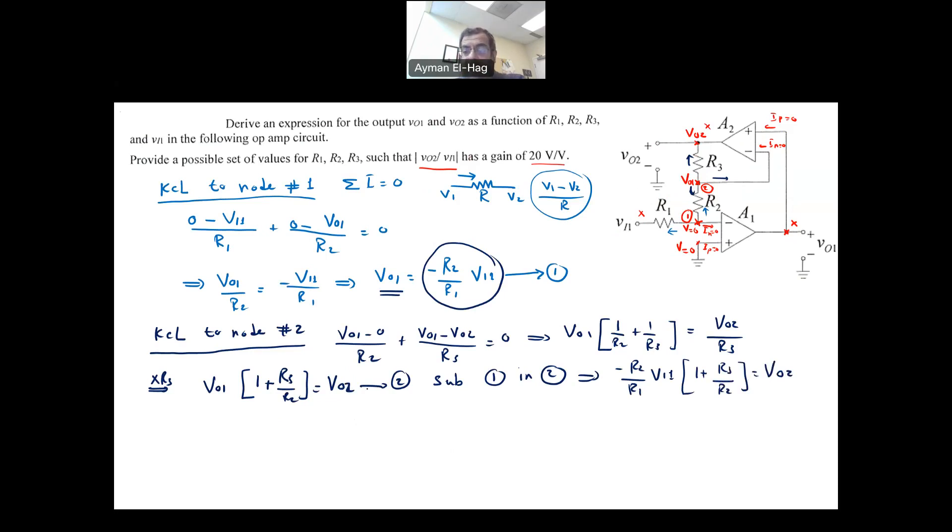Now I will take this to the other side. So you will have V02 over V input 1, and that is exactly what we want. We want to have the gain. Multiply this with the inside bracket. So it is minus R2 over R1 minus R3 over R1. So that is your gain. This is the output here in terms of your input.